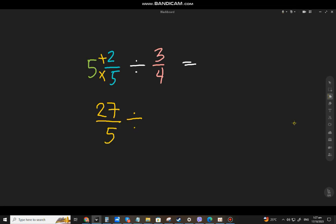Divided by, we have to change the divisor, we have to get the reciprocal. So reciprocal of 3⁄4, that will be 4⁄3. And change the division sign to multiplication.